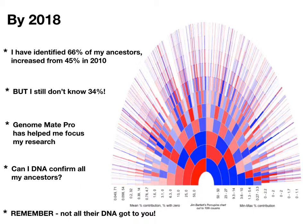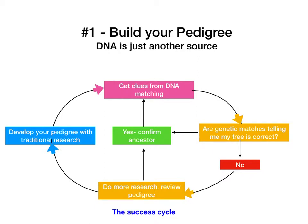Remember, this porcupine chart shows that not all my ancestors' DNA got to me, but it might have got to my cousins — so you need to look broadly. Building your pedigree is a continuous cycle and DNA is just another resource for that. You just need to be looking at all your matches all the time and asking: are these genetic matches telling me my tree is correct? If it is, you can confirm your ancestors, but if not, you need to do more research.